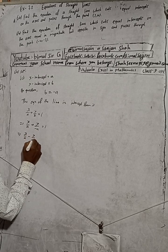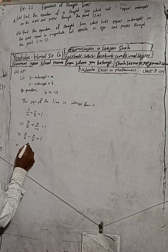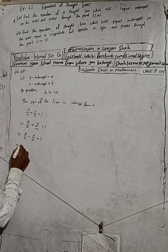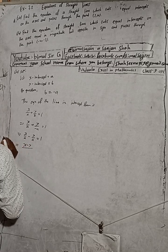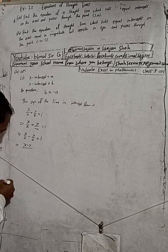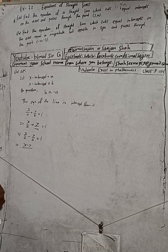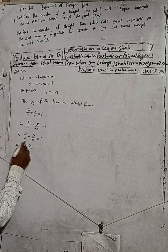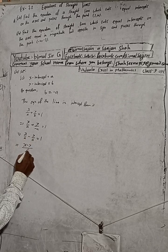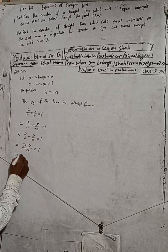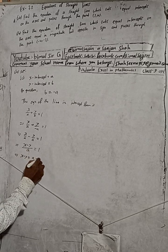This simplifies to: x/a - y/a = 1. Since the denominators are the same, we can combine: (x - y)/a = 1, which gives us x - y = a. This is equation (1).